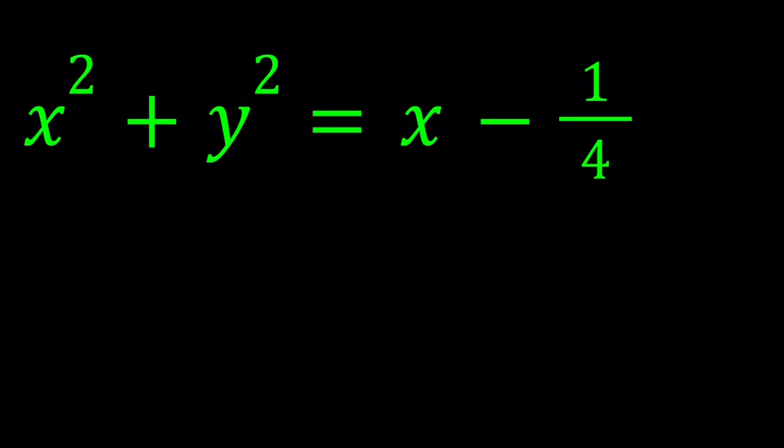Hello everyone. In this video, we're going to be solving a polynomial equation in two variables. We have x² + y² = x - 1/4. I'm going to be solving for x and y values. x and y are real numbers, so this is not a Diophantine equation where we look for integer or rational solutions.